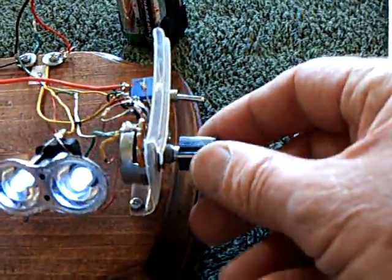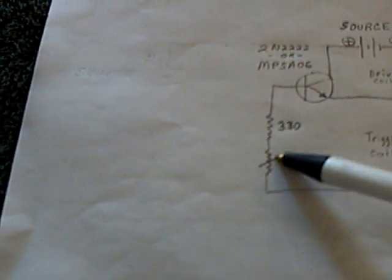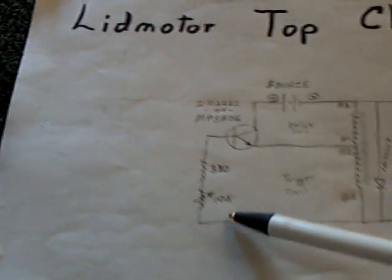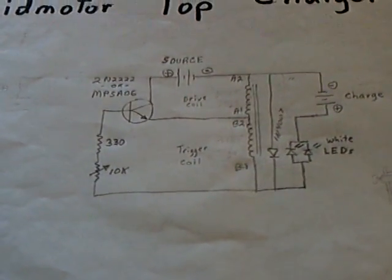And a little speed controller right here, which is the potentiometer in the circuit right there, which controls the electricity going to the base of that transistor.